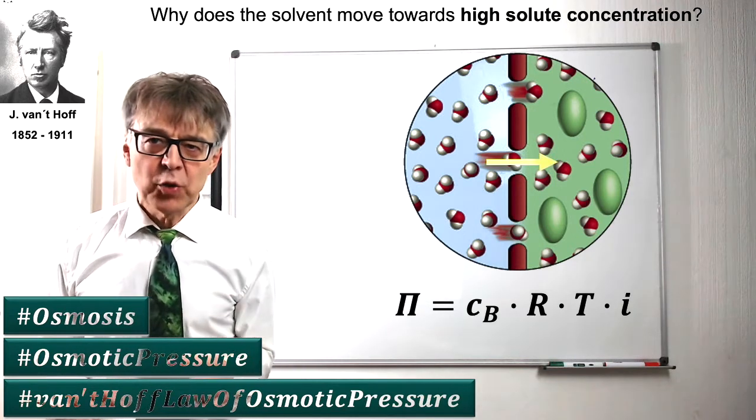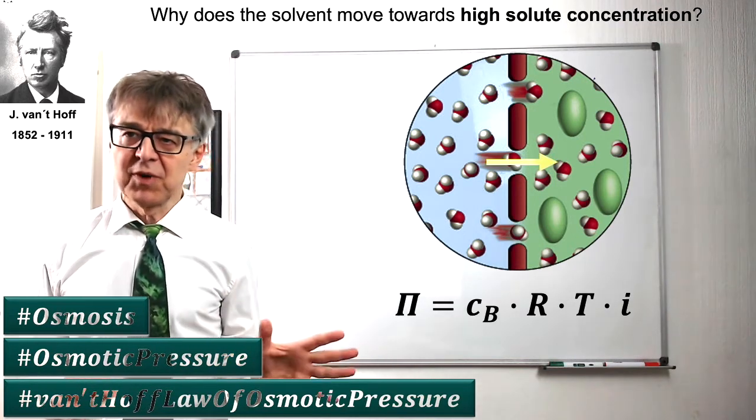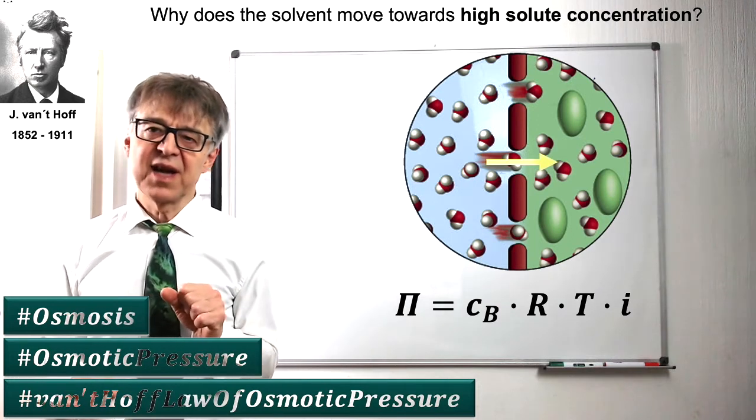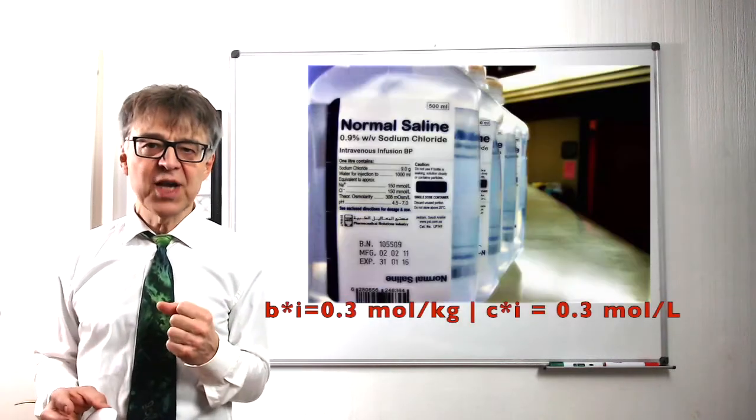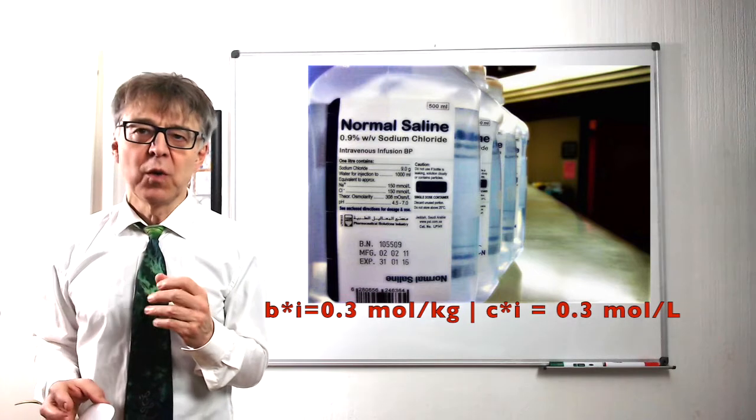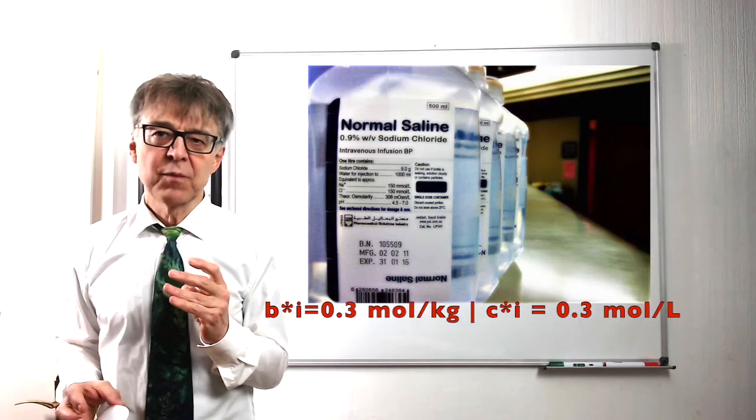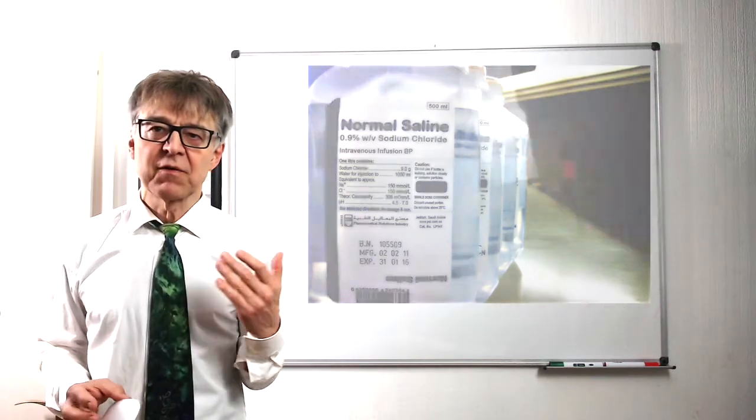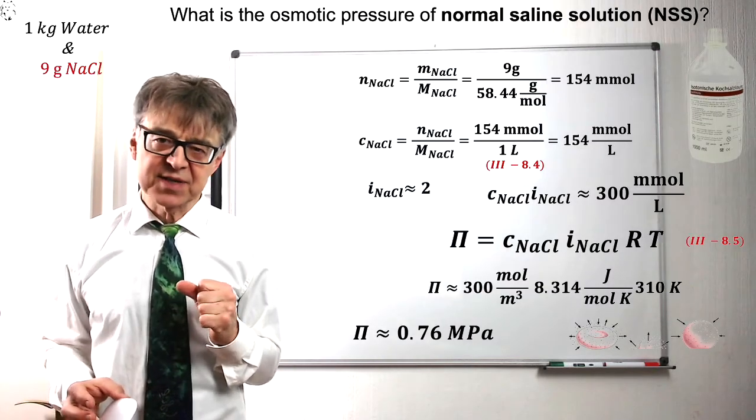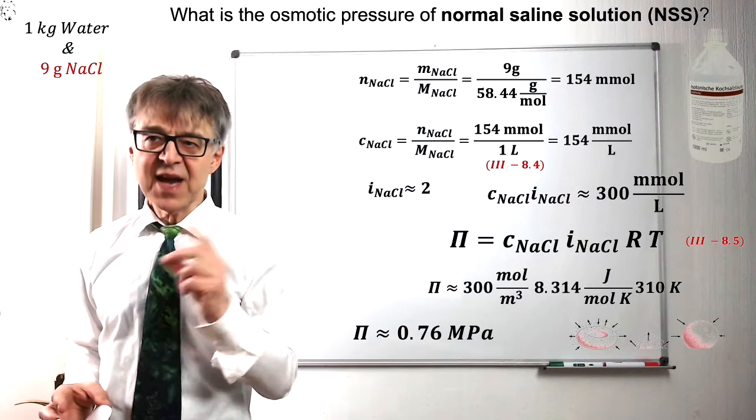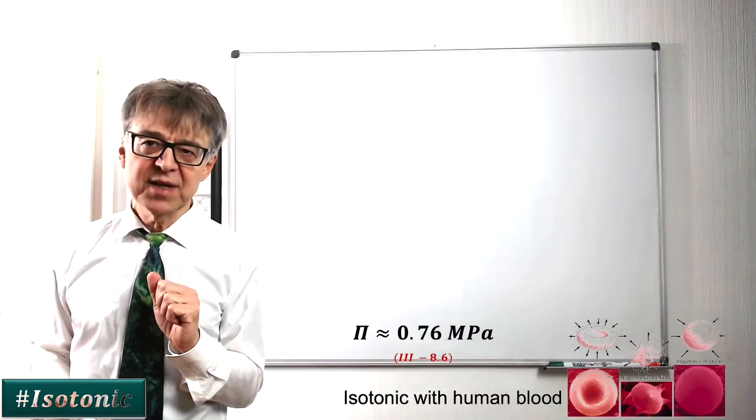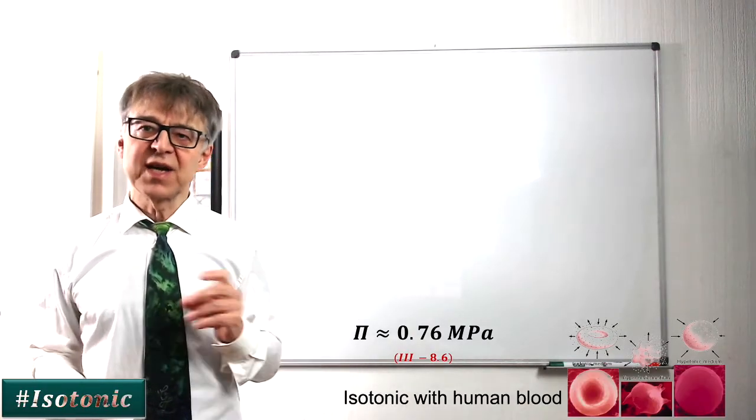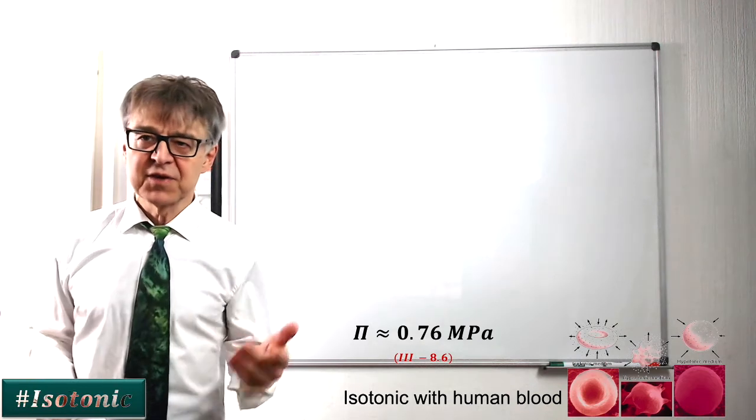The additional pressure, which builds up in the more concentrated solution, is called the osmotic pressure. According to van't Hoff, we can calculate it from osmolarity, the gas constant, and temperature. This commercially available saline solution with an osmolarity of 0.3 moles per kilogram shows an osmotic pressure of 0.76 megapascals. This is exactly the osmotic pressure of human blood, so these solutions are used in intravenous therapy.